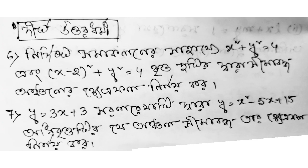Thank you so much. The problem is: 3x plus 3y equals x squared minus 5x plus 15 — for the parabola, find the area of the region bounded by the chord, and determine the area.